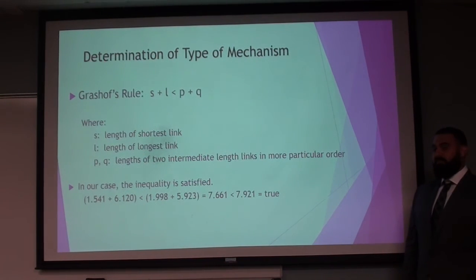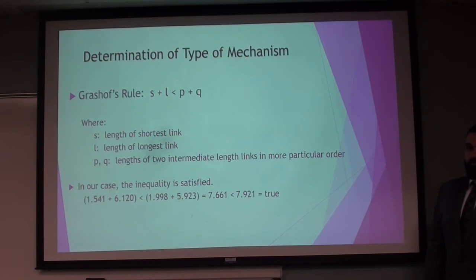Next, we have to determine what type of four bar mechanism it is. So, we use Grashof's rule, which states that the length of the longest link plus the shortest link needs to be less than the two intermediate links. In this case, the inequality satisfies, meaning we do have a type one mechanism.